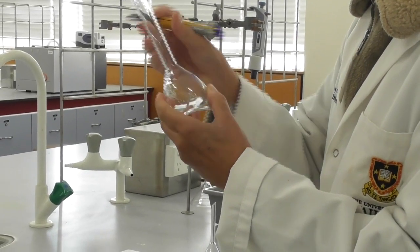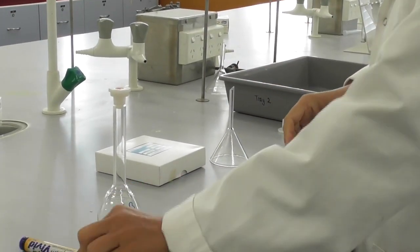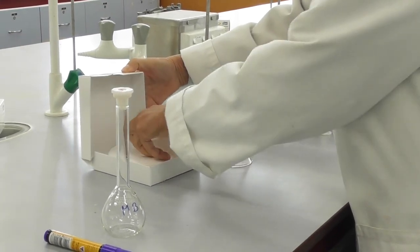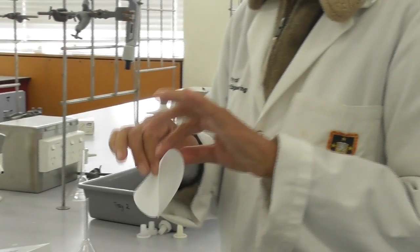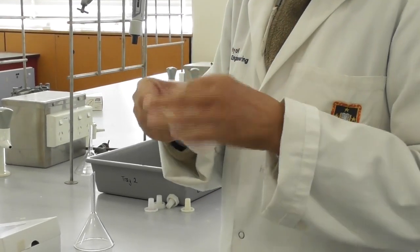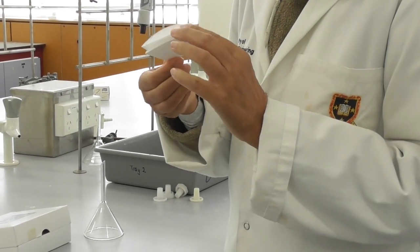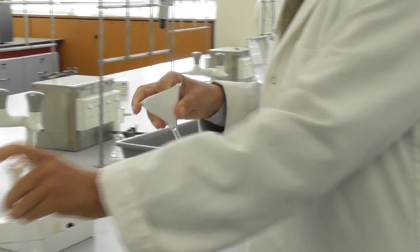At the bench I prepare a 100 milliliter volumetric flask and a filter setup. So I take a filter paper, fold it in half and fold it in half again to create a cone that I can put into my funnel.